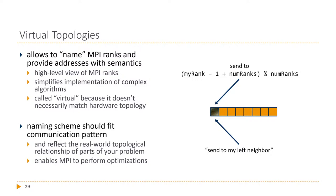It's called 'virtual' topology because it doesn't necessarily match the physical hardware network topology. You could create a two- or three-dimensional Cartesian grid topology that doesn't represent how the network nodes are actually connected. But it still offers a nice way to structure your ranks and map your problem correctly to the hardware, which can make a significant difference in communication performance.